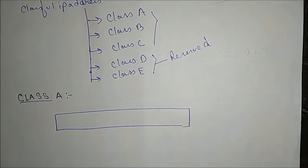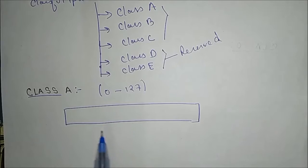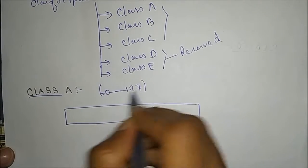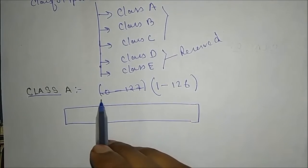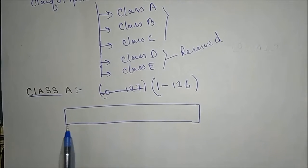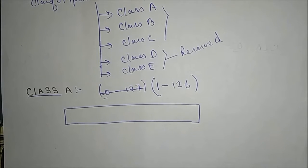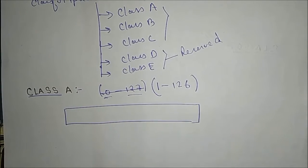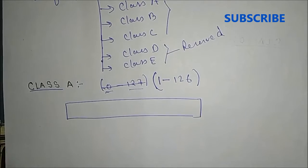We will now look at the network ID and host ID and the ranges for Class A, B, and C. Class A range is from 0 to 127 in some books, but the correct range is 1 to 126. The addresses 0 and 127 are reserved for subnetting and directed broadcasting, which I will explain in upcoming videos. So remember: Class A range is 1 to 126.